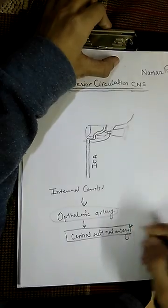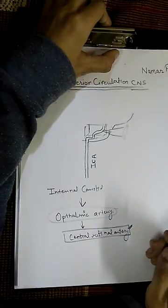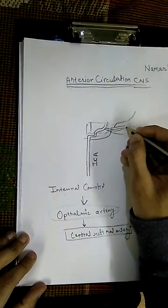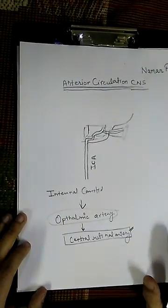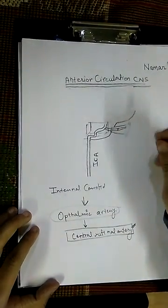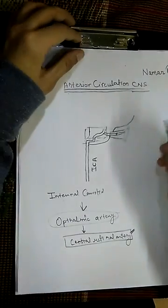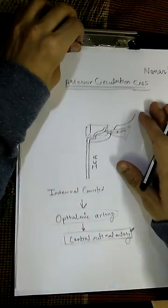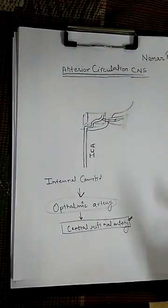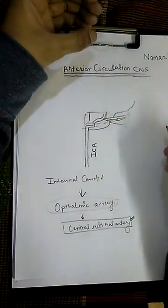This artery has major clinical relevance because the central retinal artery supplies blood to the retina. If there is some thrombus stuck in this artery, the patient will suffer sudden blindness. So if a patient comes to you and says they are suddenly having blindness in one eye with nothing else happening, you actually have to check their internal carotid system.